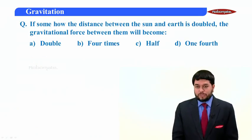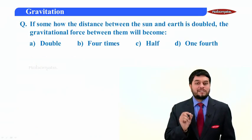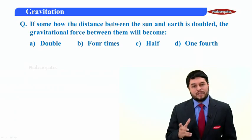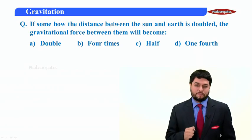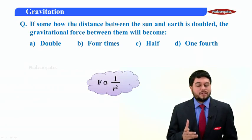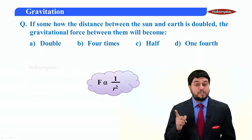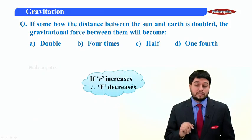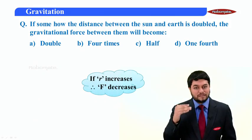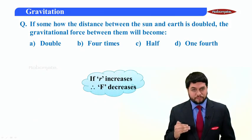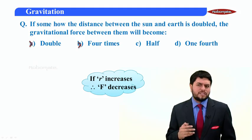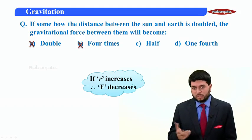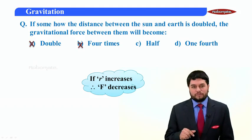Let's see one more question. If somehow the distance between the sun and earth is doubled, then the gravitational force between them will become what? Now, you know gravitational force is inversely proportional to the square of the distance between the two material bodies. And inversely proportional means if R increases, force F will decrease. Right? So force will decrease means A option and B option cannot be the answer because that says doubling and four times, not possible. So either it is half or one fourth.